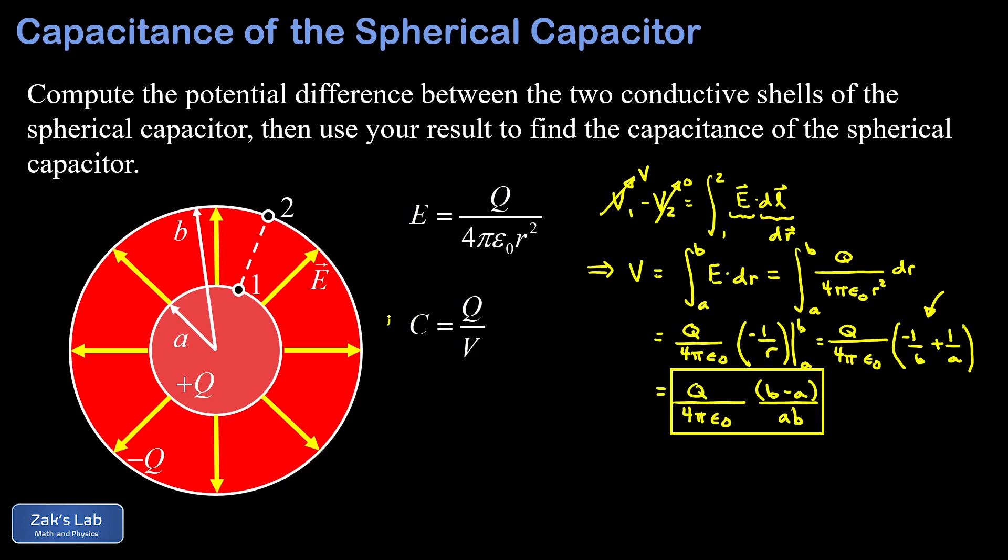Now remember, the plan was to use the definition of capacitance, that's Q over V, where Q is the charge magnitude on the two plates and V is the potential difference between them. So all we have to do is take Q and multiply by the reciprocal of our potential difference V. So in our numerator, we're going to get 4 pi epsilon zero AB. And in our denominator, we have a Q times the quantity B minus A. The Q's are going to cancel out here. And we find that our capacitance is equal to 4 pi epsilon zero AB divided by B minus A.